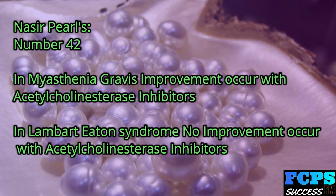Nasir Pearl number 42: In myasthenia gravis, improvement occurs with acetylcholinesterase inhibitors. In Lambert-Eaton syndrome, no improvement occurs with acetylcholinesterase inhibitors.